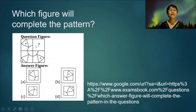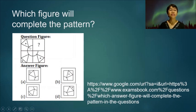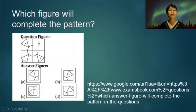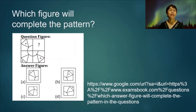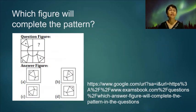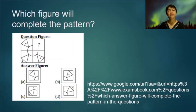Which figure will complete the pattern? The question figure has a missing square. We expect that the whole figure will complete the circle, and there will be a triangle which will have symmetry with the triangle on the lower-left corner. The answer is letter D.